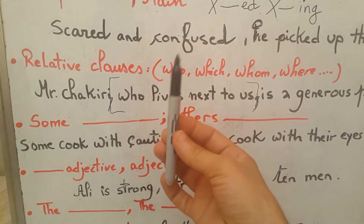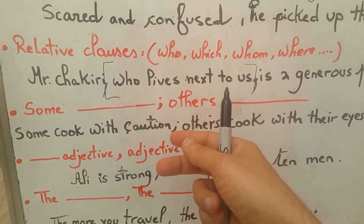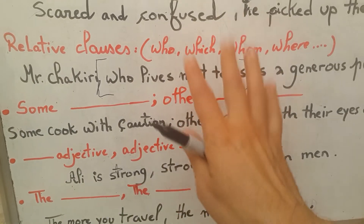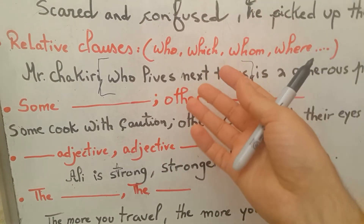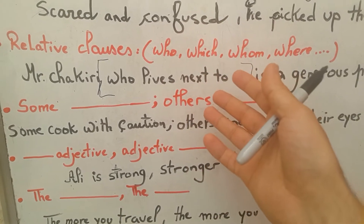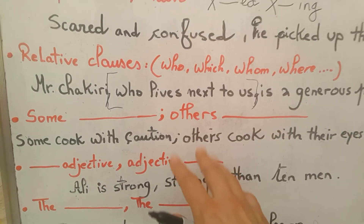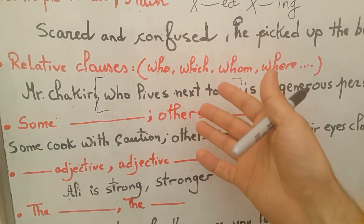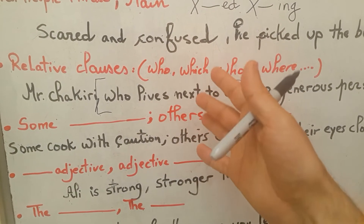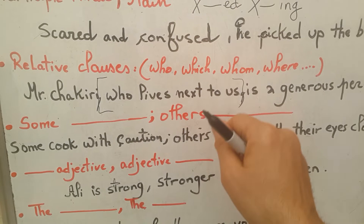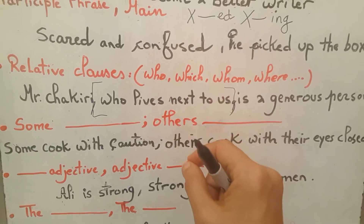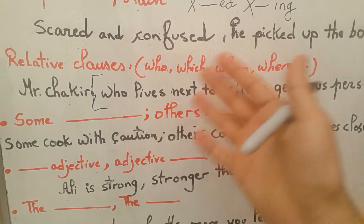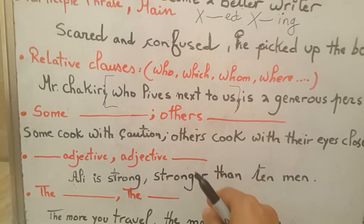It is a non-defining relative clause because I know only one Mr. Shakiri — not two or three. It is just adding extra information about Mr. Shakiri. If you are the sort of person who reads books, you may notice that writers love using relative clauses. Please try to use them — not too often, but do use them — because they add an extra level of detail to your writing.